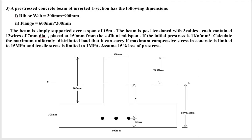Let's solve a problem: a pre-stressed concrete beam of inverted T-section has the following dimensions. Web or rib: 300 mm by 900 mm. Flange: 600 mm by 300 mm. The beam is simply supported over a span of 15 meters. The beam is post-tensioned with three cables, each containing 12 wires of 7 mm diameter, placed at 150 mm from the soffit at mid-span. The initial pre-stress is 1 kilo Newton per mm square. Calculate the maximum uniformly distributed load if maximum compressive stress in concrete is limited to 15 MPa.